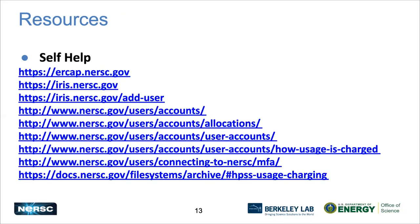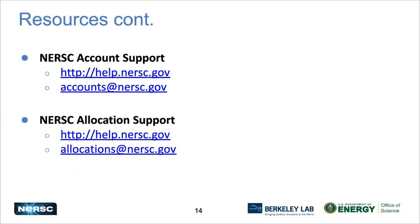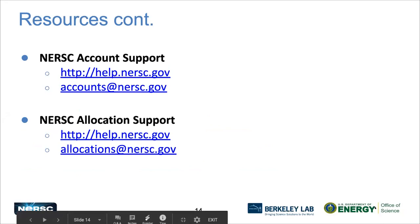Regarding the overrun queue: other than low priority, there are no additional penalties. Here are some resources — URLs where you can find information about accounts, allocations, how usage is charged, and setting up your MFA. If you need help, help.nersc.gov is our help desk system where you can log in and submit a trouble ticket, or you can email accounts@nersc.gov for account problems or allocations@nersc.gov for allocation support.